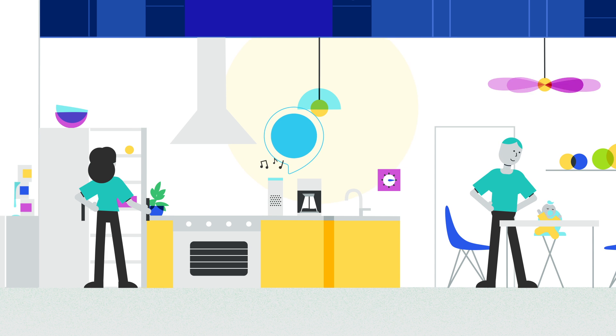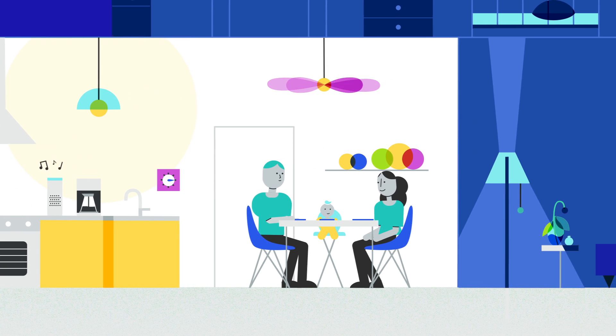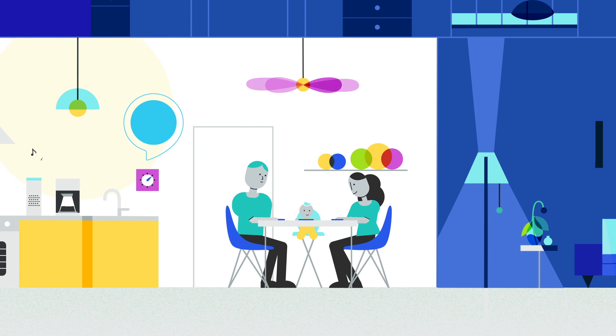A built-in voice user interface for smart home control makes it easy. Alexa, set the downstairs temperature to 72. Okay.